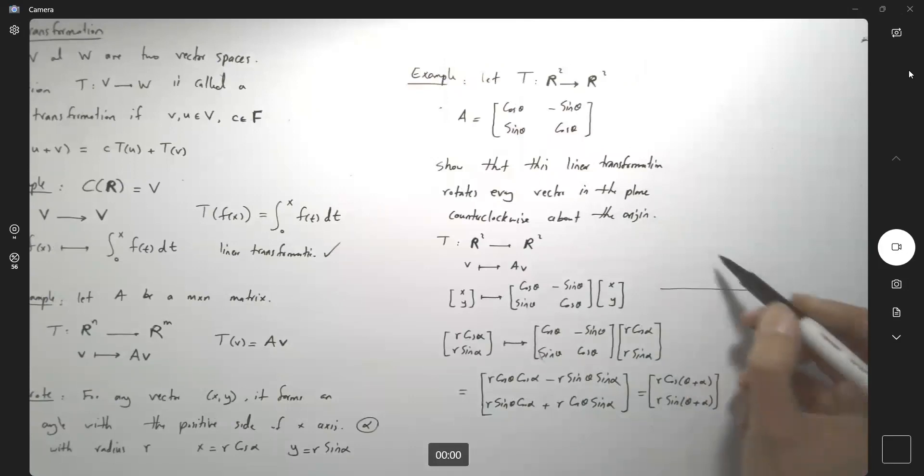So, if you think about the plane, you have the vector X and Y, with radius R, and here you have angle alpha. So, this transformation takes this guy, taking up the terminal point, and start rotating it counterclockwise. Here you have this point, T of X and Y, and the angle here is theta.